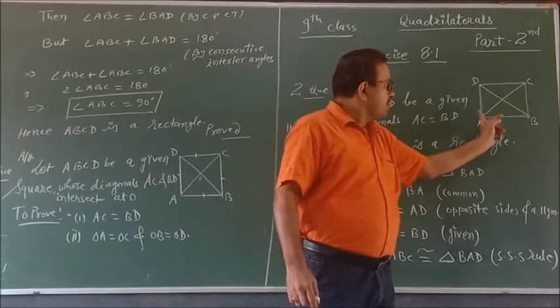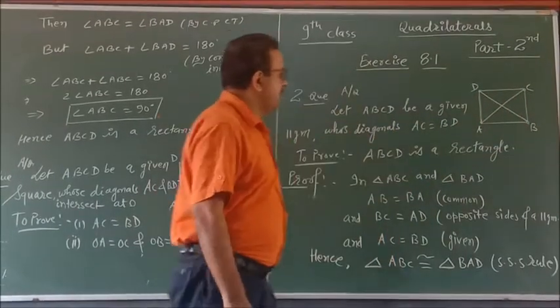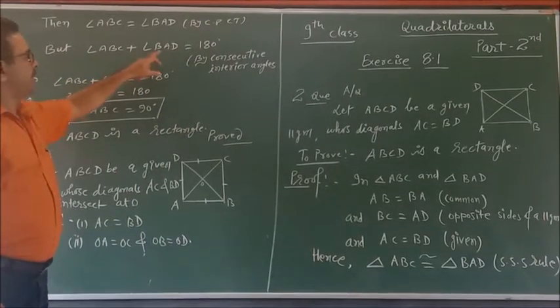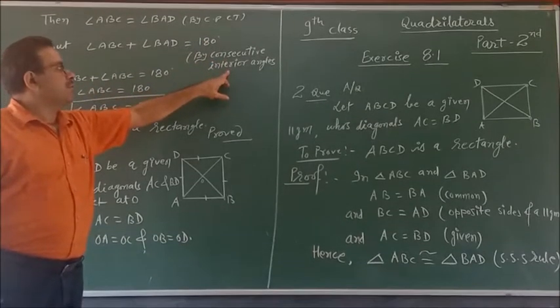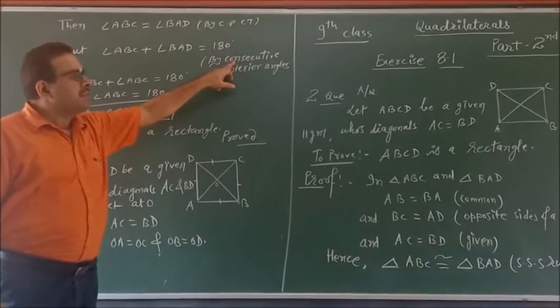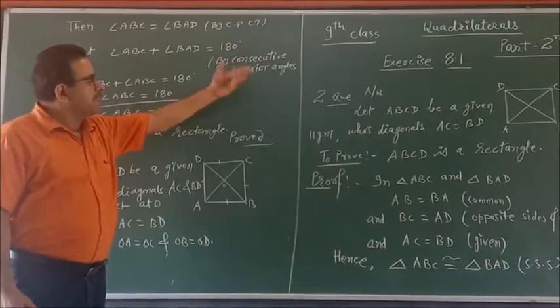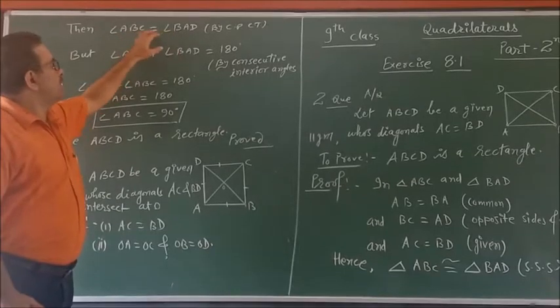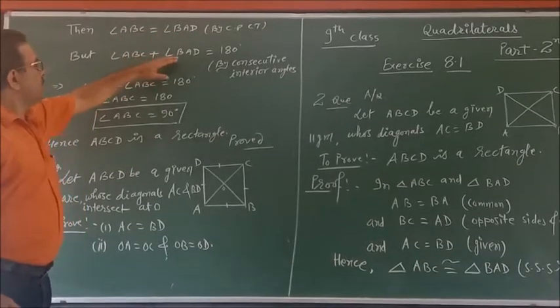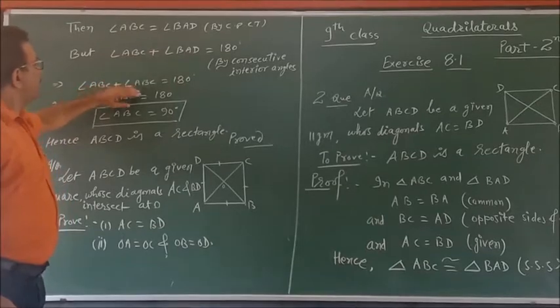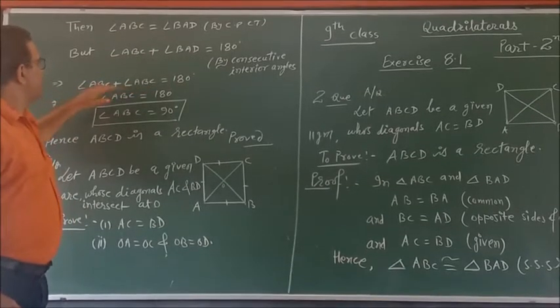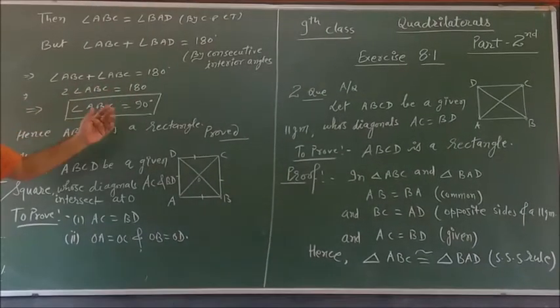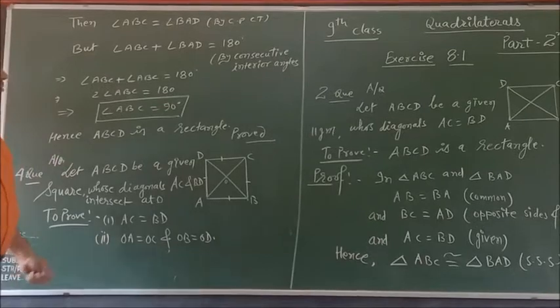The sum of angle ABC plus angle BAD is equal to 180 degrees. We have congruent by CPCT which means they are equal to each other. So we write angle ABC in the place of angle BAD, which means twice of angle ABC is equal to 180. Divided by 2 on both sides, we get angle ABC is equal to 90 degrees.